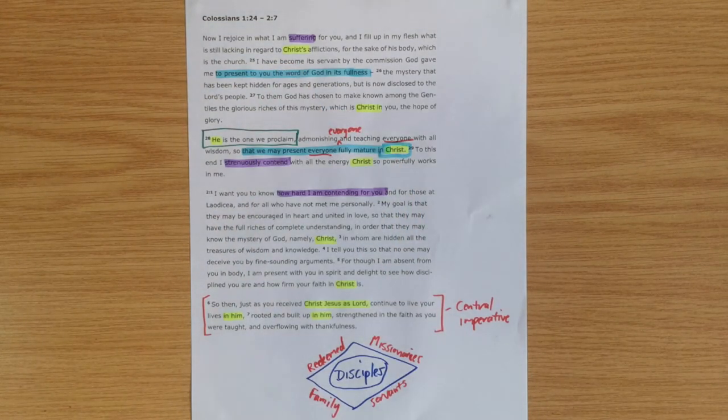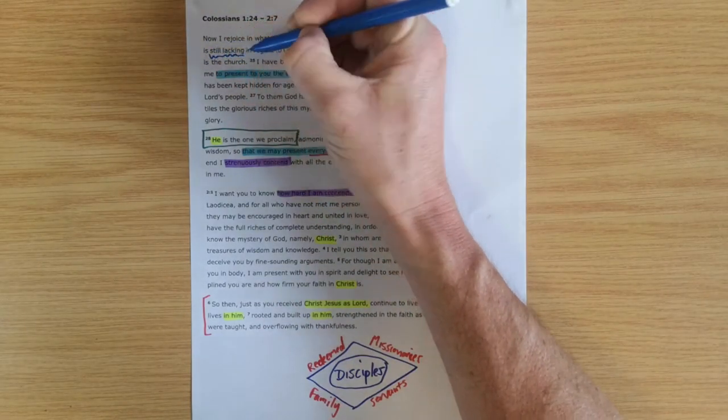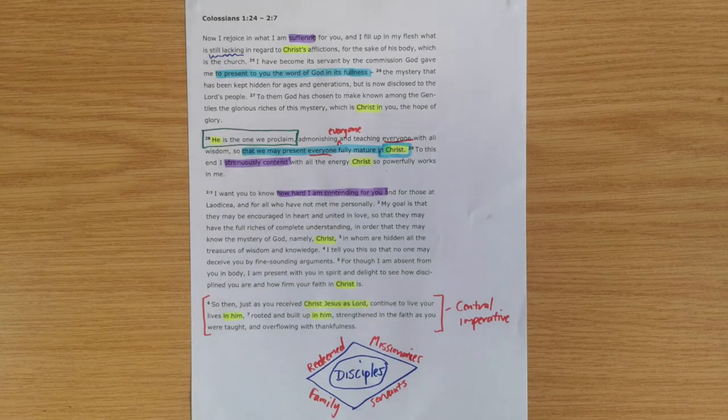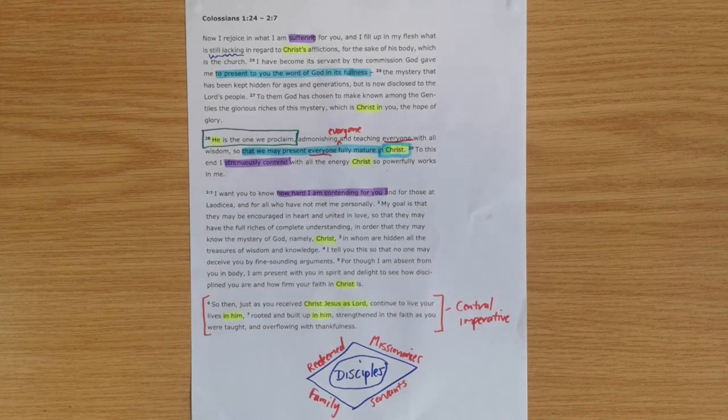There's nothing lacking in Christ's afflictions in the sense of what they achieved to save us. When he says what is still lacking, I take that to mean the suffering of Paul and the suffering of all future Christians for the sake of the gospel—what Paul means by what is still lacking with regard to Christ's sufferings for the sake of the body.